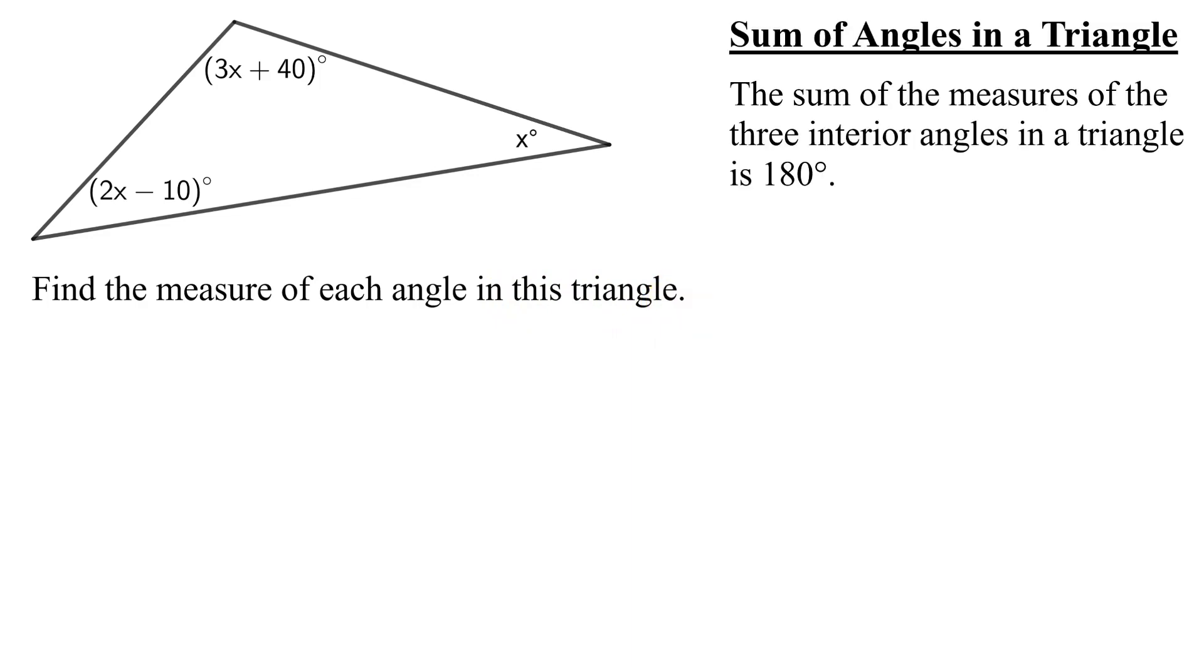Well, quickly reviewing the sum of the angles in a triangle: the sum of the measures of the three interior angles in a triangle is 180 degrees. So I'm going to have to add up my three angles and set it equal to 180 degrees.